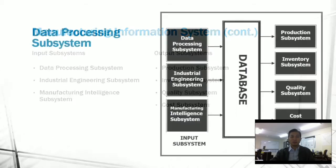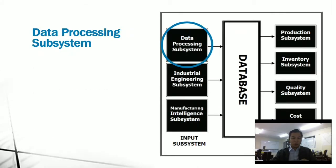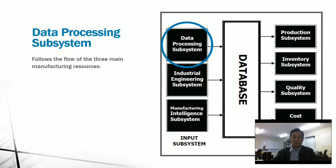Let's start with data processing. Data processing focuses on the flow of three main manufacturing resources. Number one would be materials. It's important that an organization tracks the receipt of raw materials through production and the transformation of these materials into finished goods.